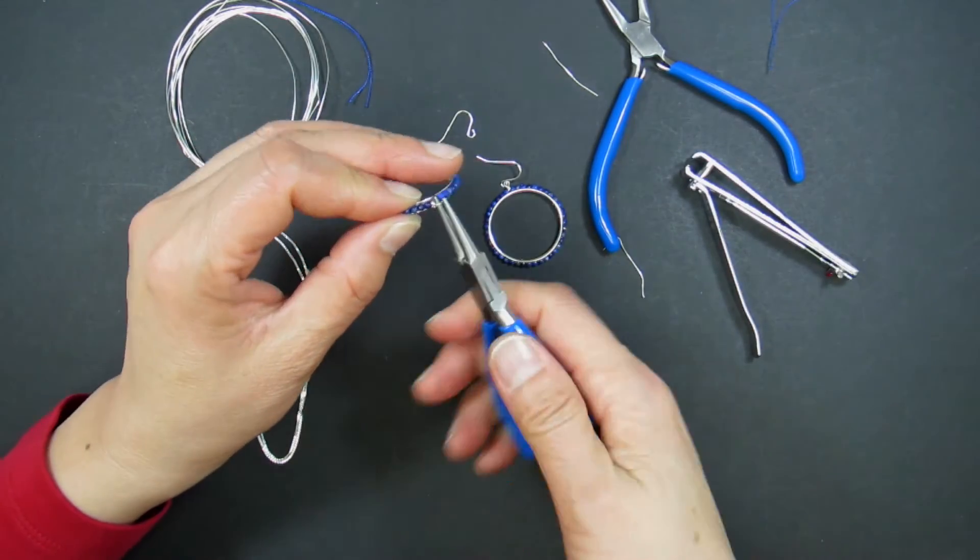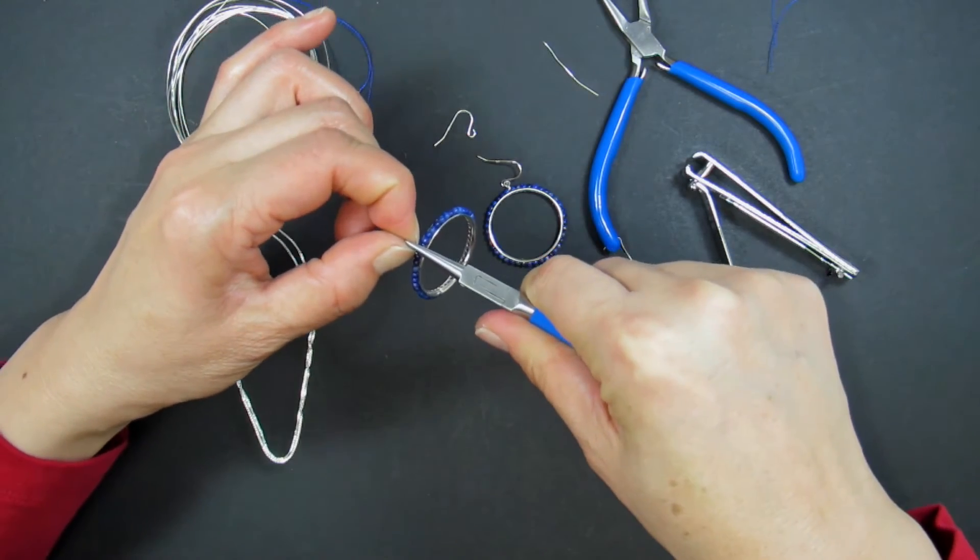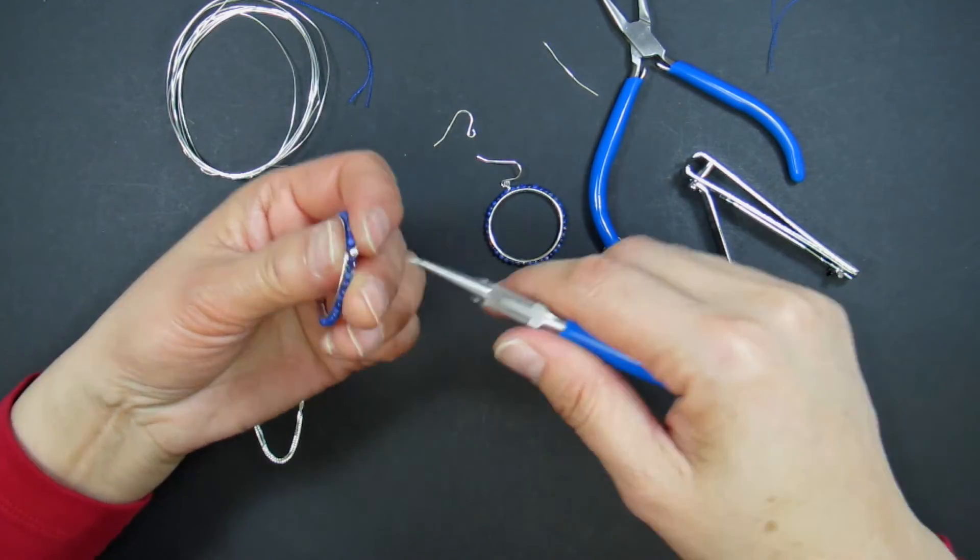If your loop is not as round as you would like, slide the loop over half of your round nose pliers, gently pressing down to round it out.